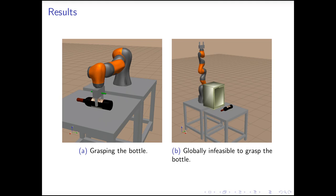Our approach can also detect infeasibility. On the left-hand side, our solver finds a posture for the arm to grasp a wine bottle on the table. On the right-hand side, if we put a wine fridge in between the arm and the bottle, then our approach proves that it is globally infeasible to find a grasping posture.